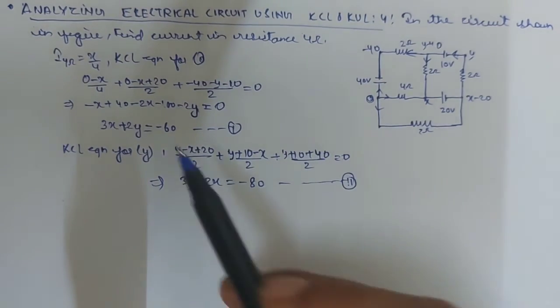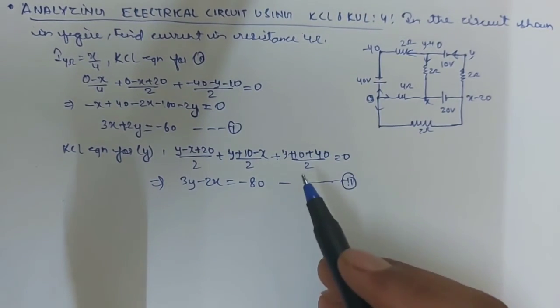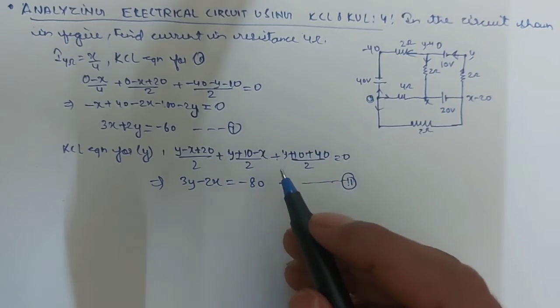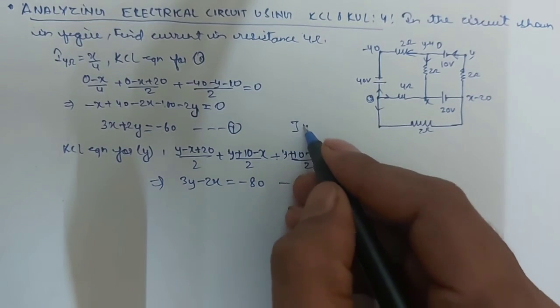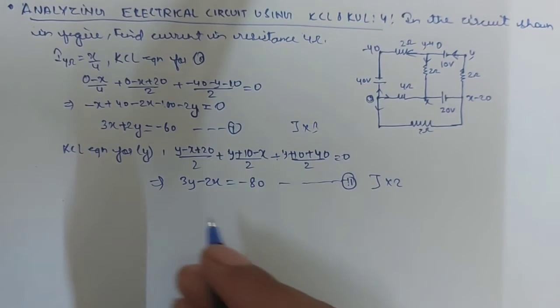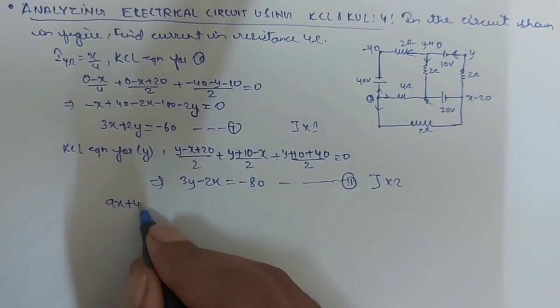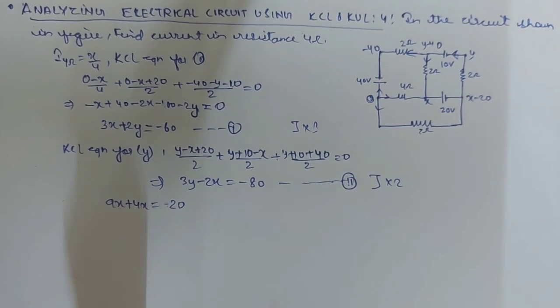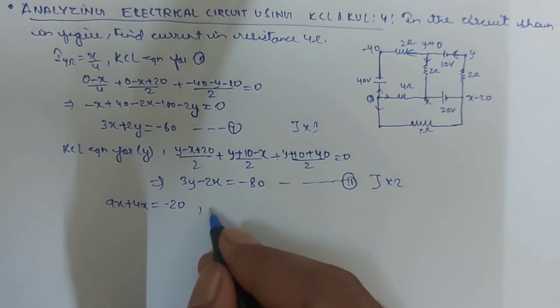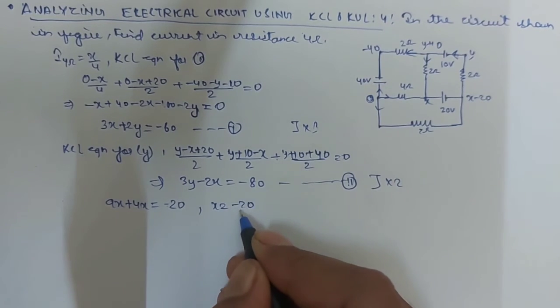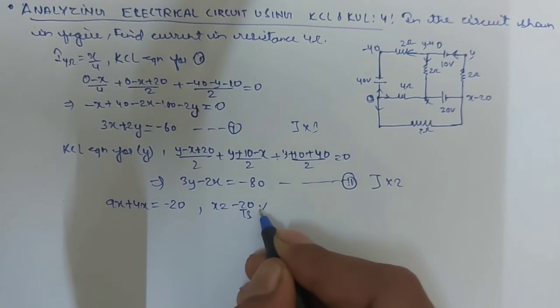On solving first and second equation. So, can you multiply this with 3 and this with 2? So, you will get around 9x plus 4x is equal to minus 20. So, x is equal to, you will get minus 20 upon 13 volt.